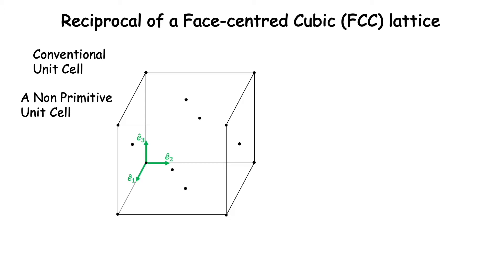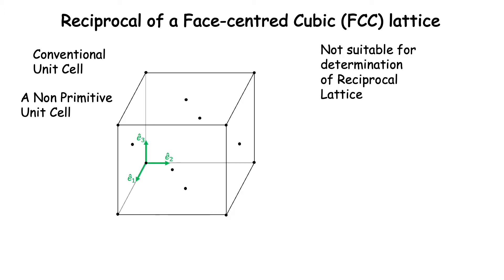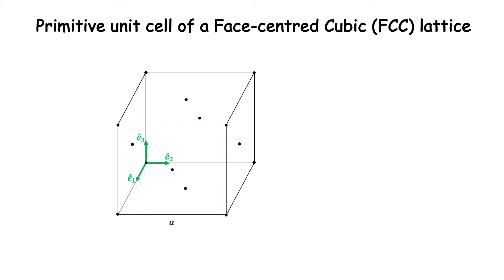A primitive unit cell has lattice points only at the corners. Since this is a non-primitive unit cell, it is unsuitable for the determination of the reciprocal lattice. So we have to first find the primitive unit cell and associated basis vectors for this lattice. This exercise we have already done in another video, the link for which has been provided in the description below. The three vectors a1, a2, and a3, shown in red here, are the vectors from the origin to the face centers of the conventional unit cell.